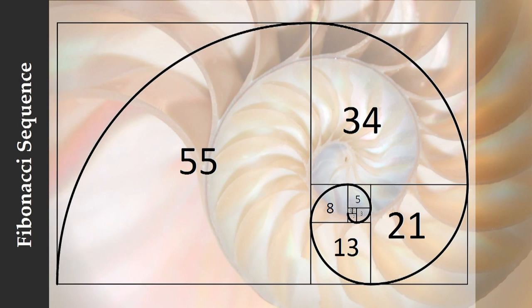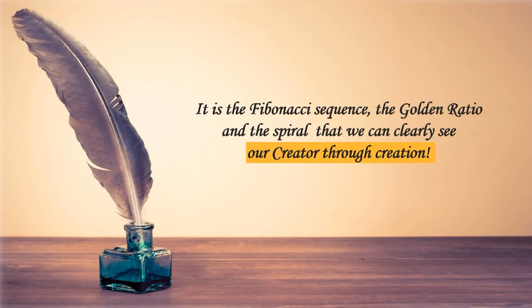One more point about the Fibonacci numbers: when you start plotting them in a square, you see the same numbers — 1, 2, 3, 5, 8, 13, 21, and 34. If you draw an arc between the squares and connect all of them, you get the Fibonacci spiral. It's the Fibonacci series, the golden ratio, and the Fibonacci spiral that together form the very signature of our creator.